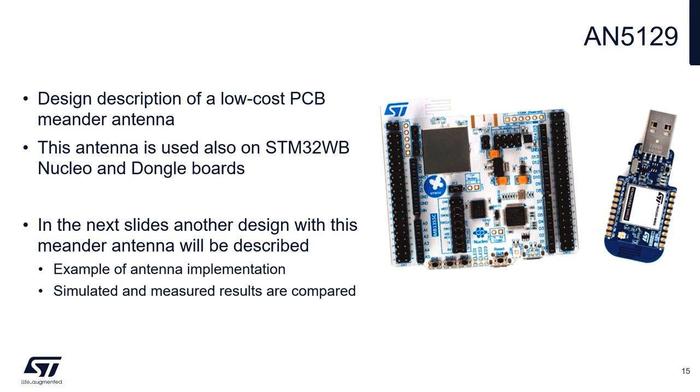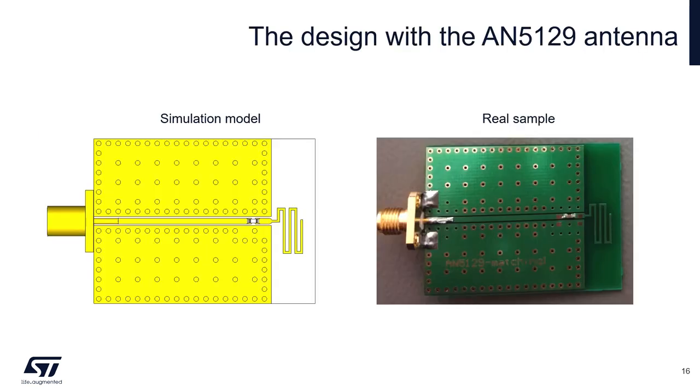In the next slides, an example of a design with this meander antenna will be described. The antenna will be used on a test board, simulated at first and then measured. Then an example of the antenna matching will be shown. The test board with the meander antenna looks like this. Here we can see the simulation model and here the real sample. Antenna matching network is placed as close as possible to the antenna. 50 ohms coplanar waveguide is used between the antenna matching network and the SMA connector. This is the ground plane, and another ground plane is also below this whole area. The antenna has no ground plane below.